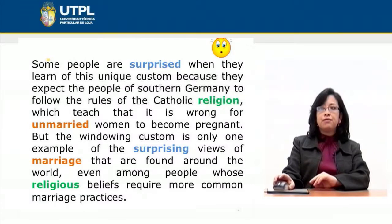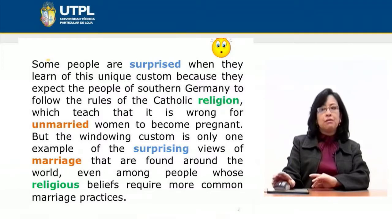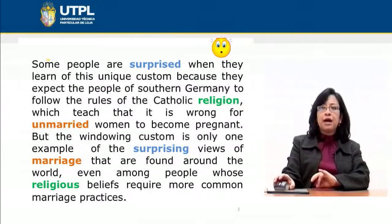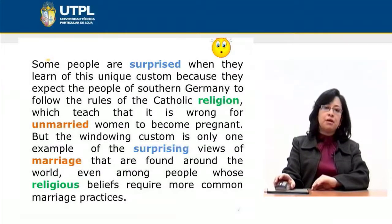As you can see, we have the use of 'surprised' and 'surprising,' which are related word forms — even though the words are not identical, they are very similar, and this is important in order to gain cohesion. We also have the words 'religion' and 'religious,' which are also related and help the reader find the logical order of the paragraph. Additionally, we have the words 'unmarried' and 'marriage,' which are also related word forms.